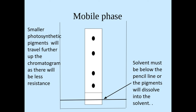The smaller photosynthetic pigments will travel further up the chromatogram because there's less resistance between them and the silica gel.